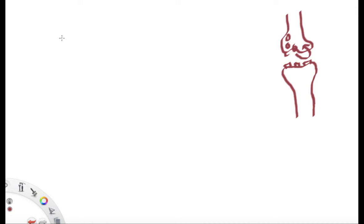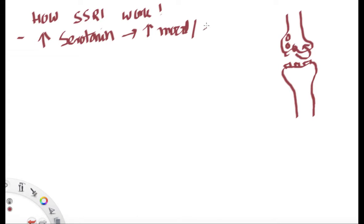Let's discuss how SSRI work. First, SSRI increases serotonin in the brain. Serotonin is involved in elevation of mood, emotion, and sleep.